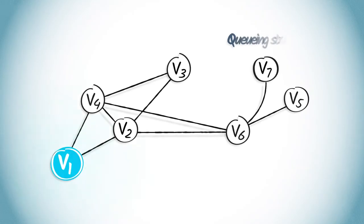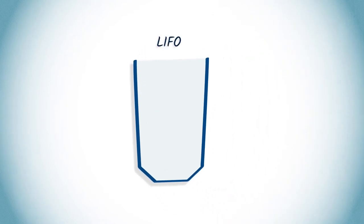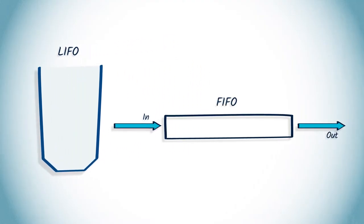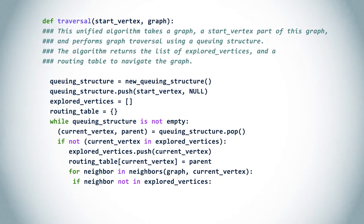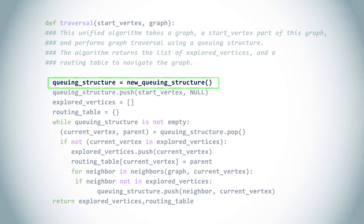A queuing structure can be used to manage the priorities with which we examine vertices in a graph when performing graph traversal. When exploring a vertex, a queuing structure can be used to store the neighboring vertices, but only if those vertices weren't previously explored. By repeating this principle until the queuing structure is empty, we obtain a DFS if we use a LIFO, and a BFS when we use a FIFO. Indeed, when using a LIFO, we first explore the last vertices that were added to the queuing structure, and thus keep following the last direction. However, when using a FIFO, we first explore the first added vertices, and thus proceed with increasing hops from the start. The following unified algorithm will function for both BFS and DFS by simply changing the queuing structure — using the LIFO for a DFS and the FIFO for a BFS.